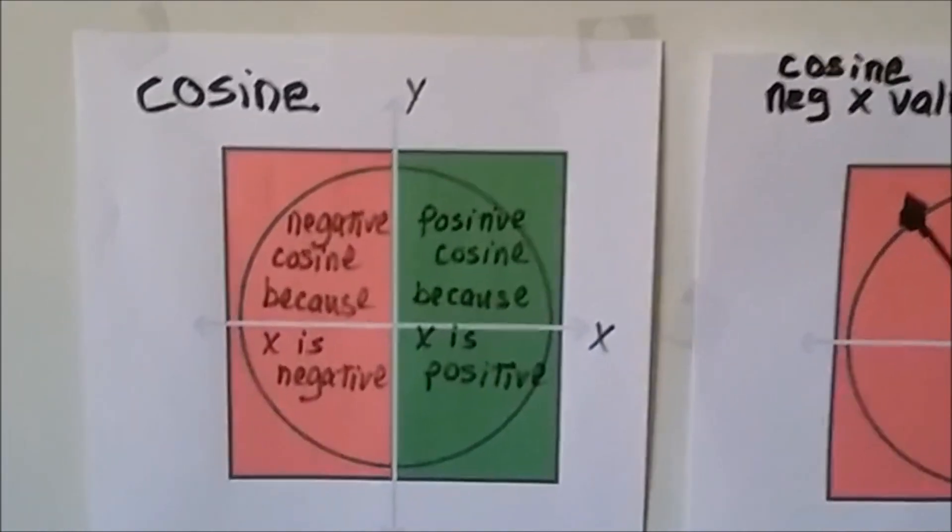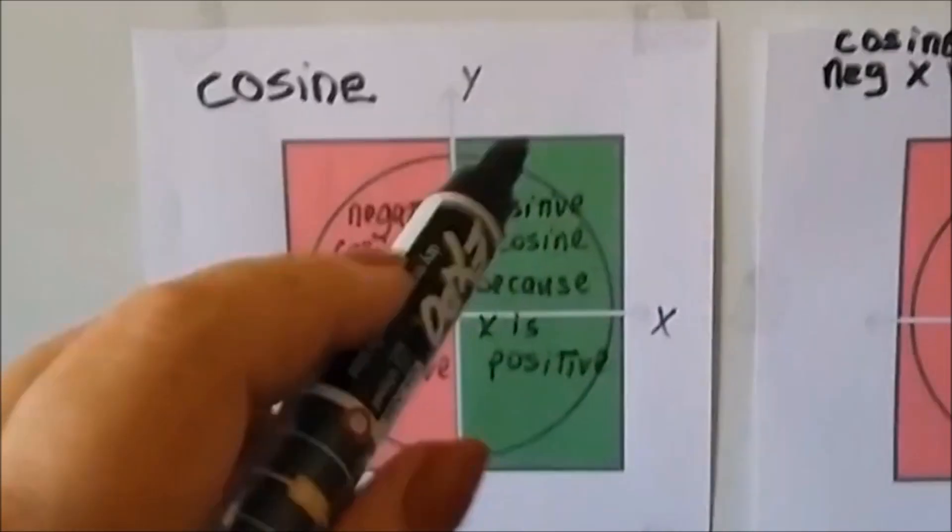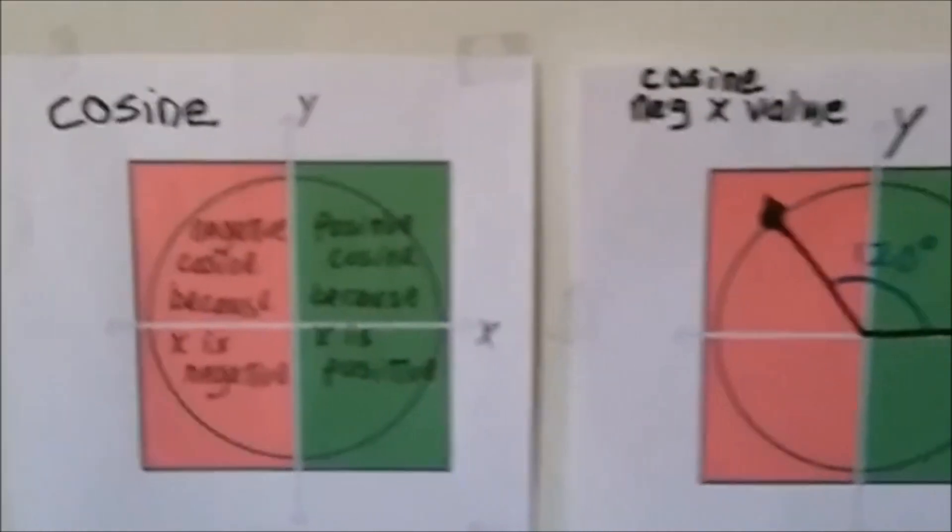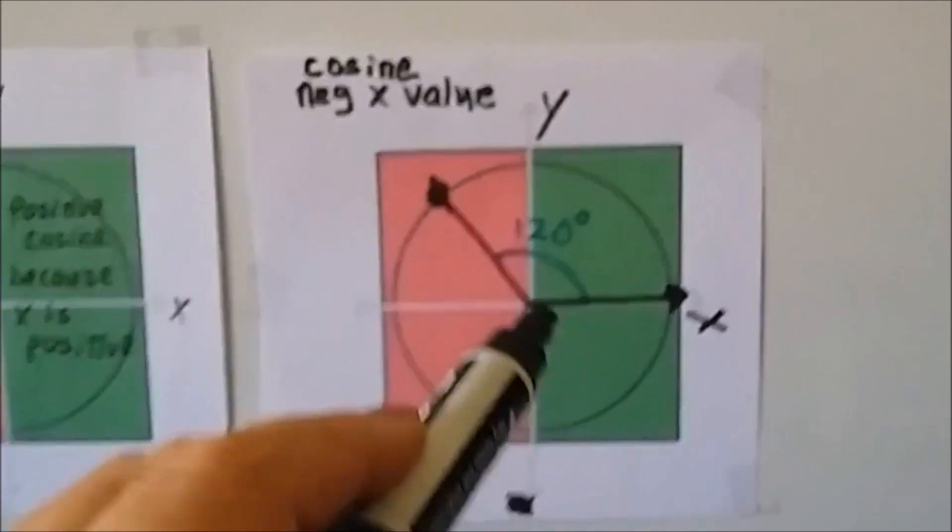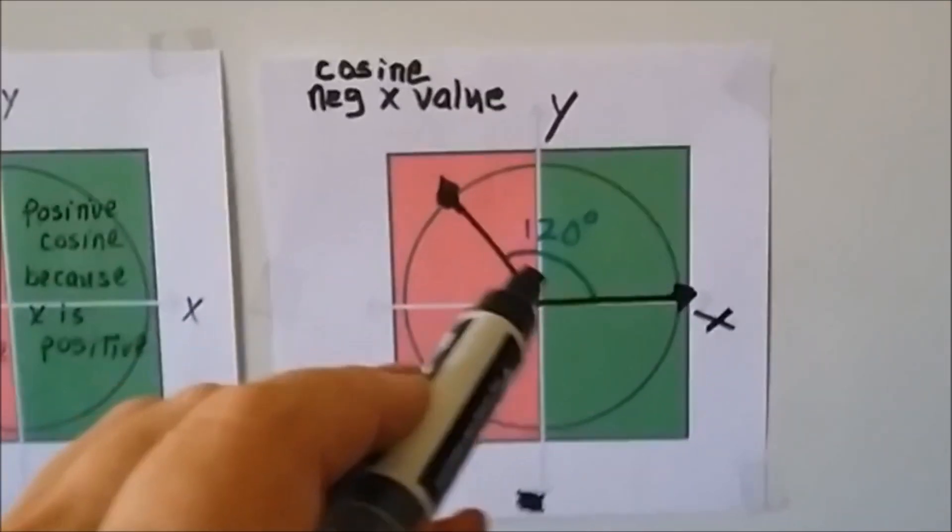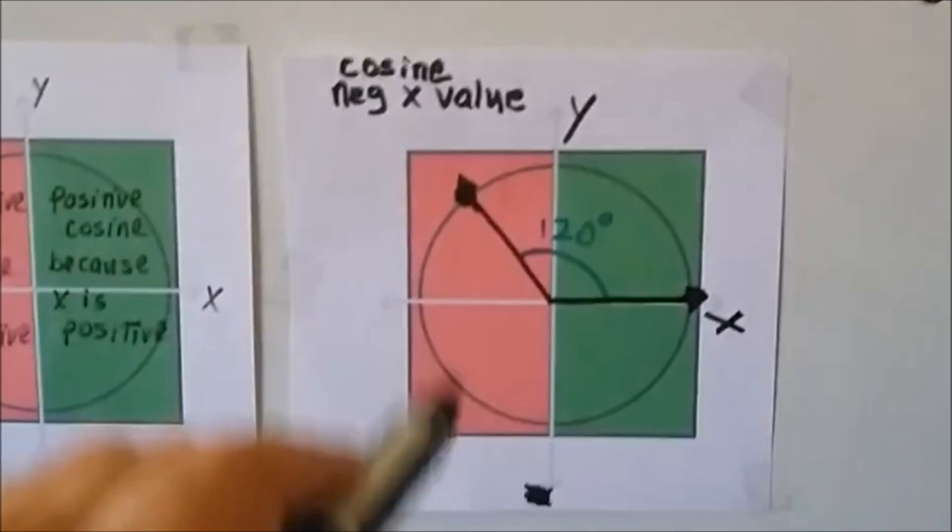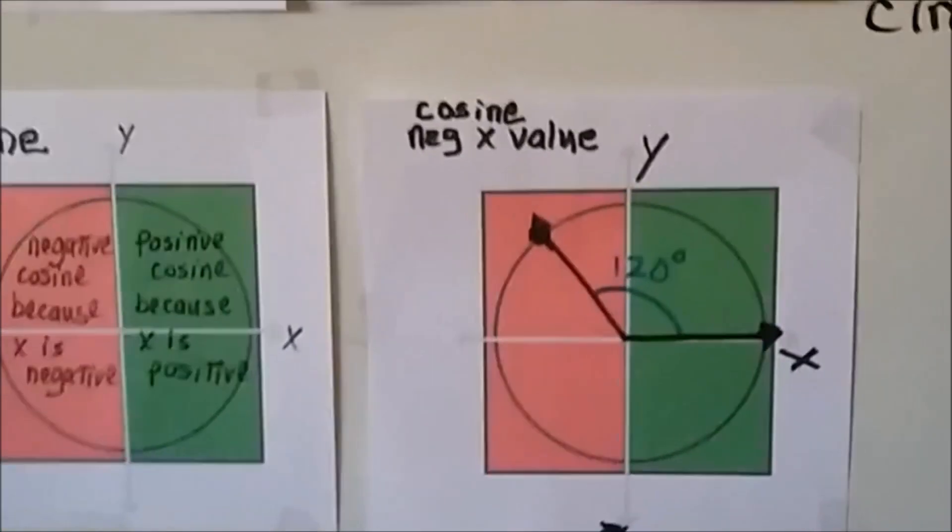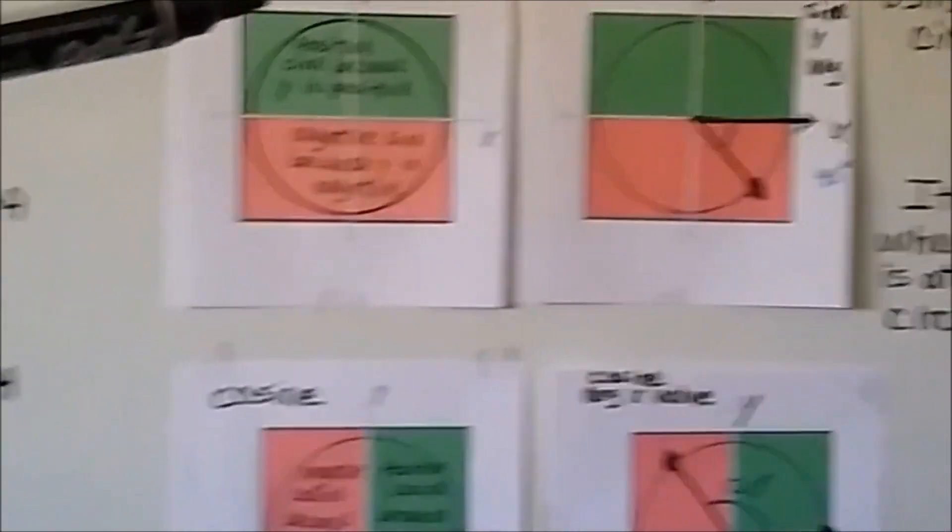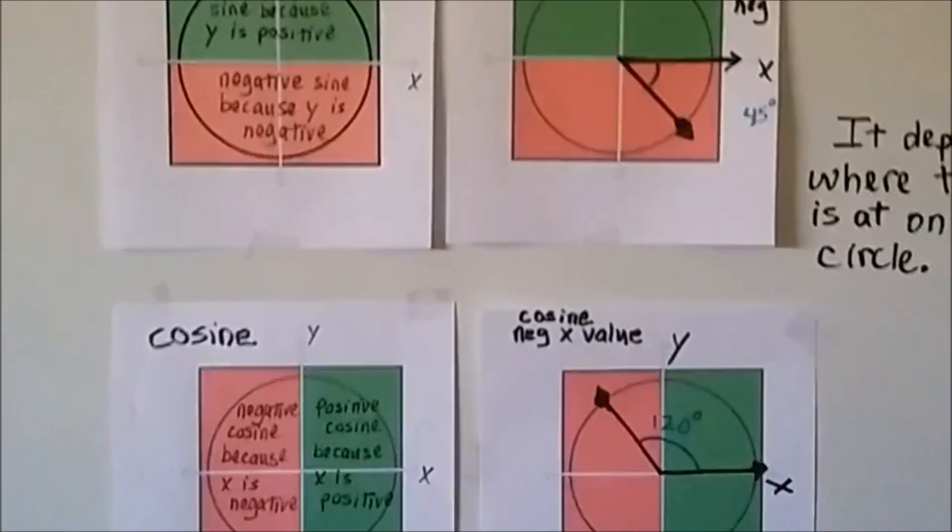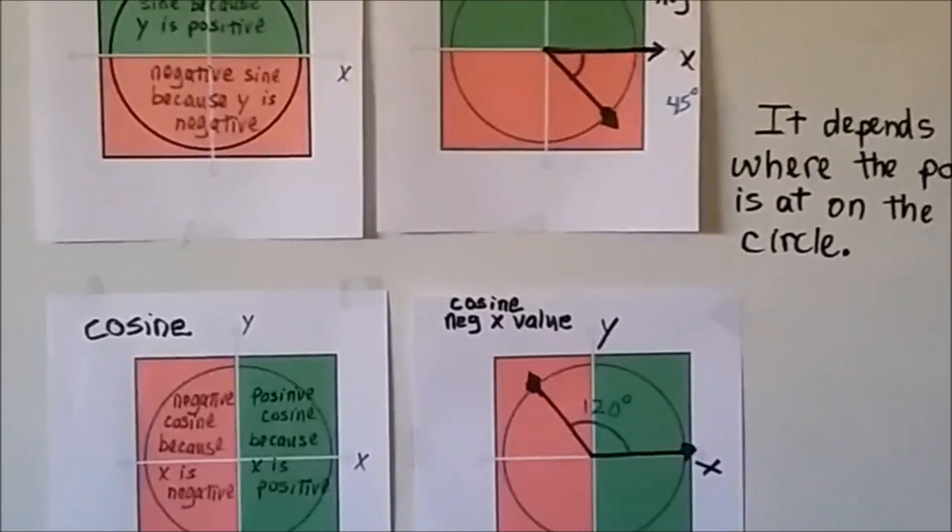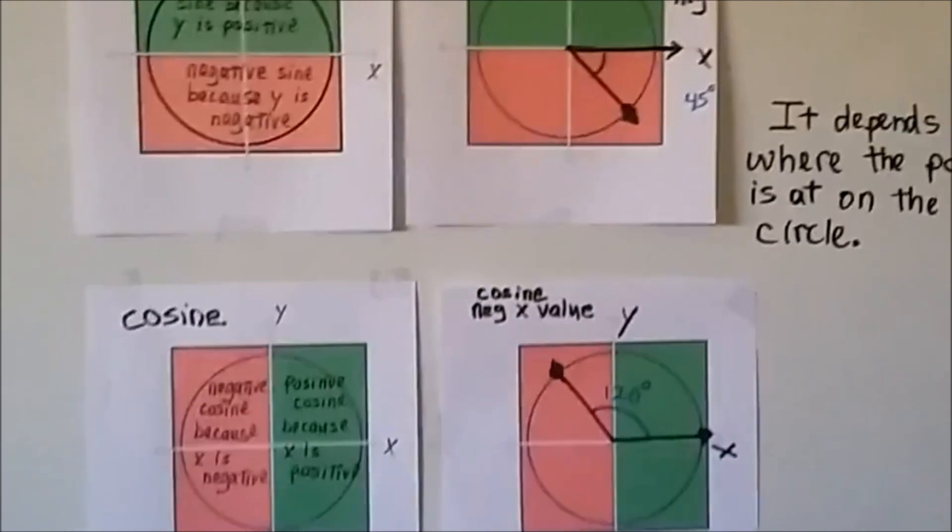For cosine, it would be a positive cosine because the X is positive on this side, and a negative cosine because the X is on the negative. If we had an angle like this, a 120 degree angle on our unit circle, and the point was right here, it's in the negatives for the X value. That would be sine for Y value, cosine for the X value. It just depends on where the point is on the unit circle. You'll probably get into that more in trigonometry.